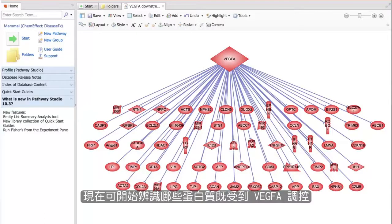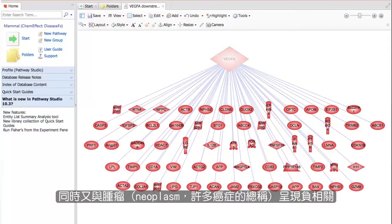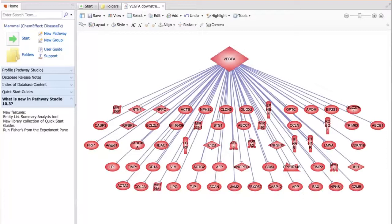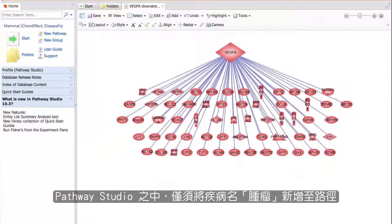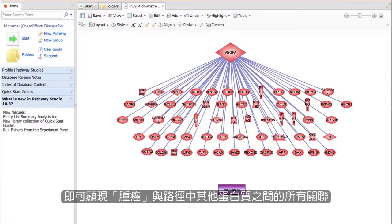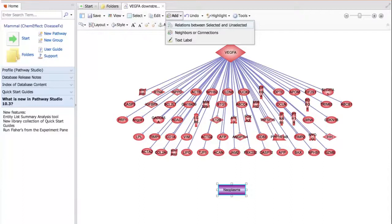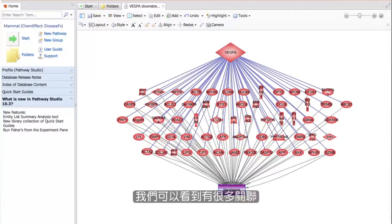Now, let's identify which of these proteins that are downregulated by VEG-FA are also negatively associated with neoplasms, a general term for many cancers. In Pathway Studio, simply add the disease neoplasm to the pathway and then find all the connections between neoplasm and the other proteins in the pathway. We can see that there are many connections.